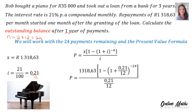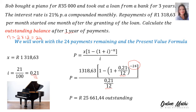Into the present value formula: in X's place, R1,318.63, bracket 1 minus bracket 1 plus I, which is 0.21 divided by 12 because it's monthly payments, raised to the power of negative 24 — that's the payments remaining — divided by I, which is 0.21 divided by 12. If you slot that into your calculator in one go with no rounding off inside your sum, then P is R25,661.44 still outstanding.